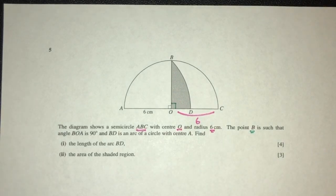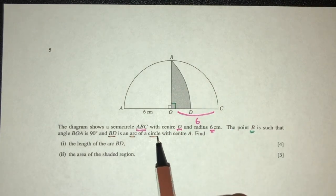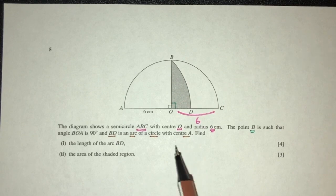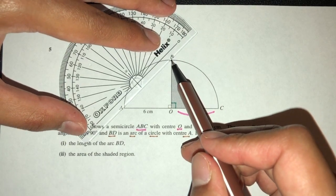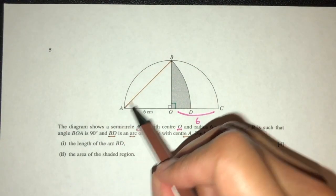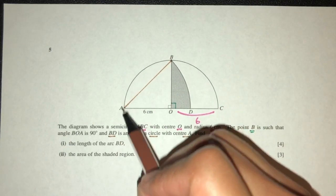Now we have BD is an arc of a circle with center A. For example, here we also have another circle, center A, which has an arc BD. So here we have a circle here, and this is the radius, AD and AB.